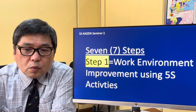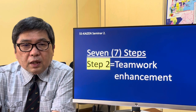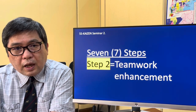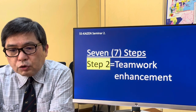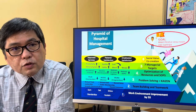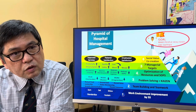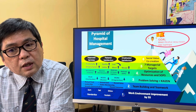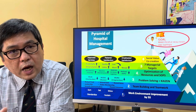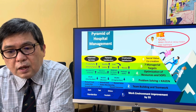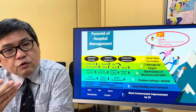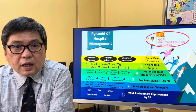During this process, we can strengthen our teamwork and enhance the capacity of each team at each respective work unit. To review: the mountain of hospital management has seven different steps to reach the summit. The first step is making use of 5S principles for work environment improvement, particularly for the physical environment. Using teamwork, we strengthen both the team itself and the capacity of each team at every work unit.